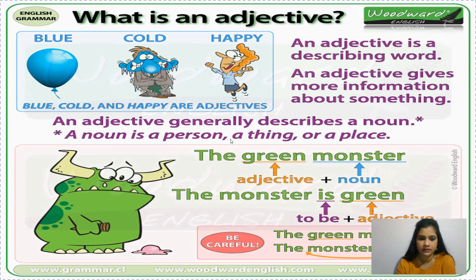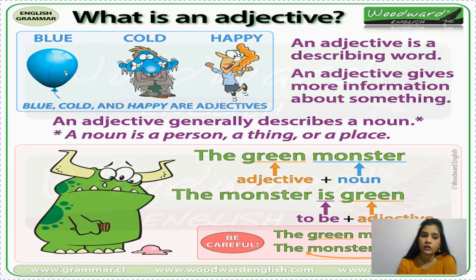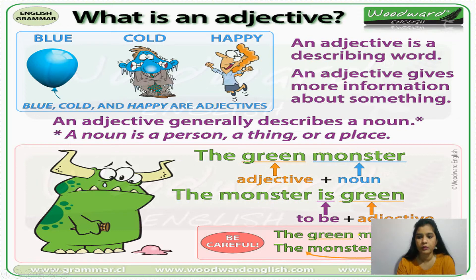Let's see one more example. Can you see the monster? The monster is green in color — can we write 'the green monster'? Monster is a noun and green is describing the monster, so it becomes an adjective. Children, we can also write it as 'the monster is green.' Just like with the balloon — we can write either 'the blue balloon' or 'the balloon is blue.' But be careful: we cannot write 'the monster green' — that would be wrong.